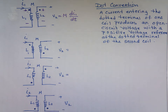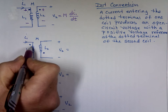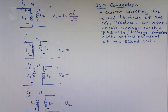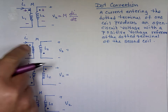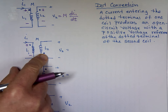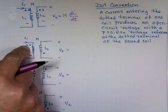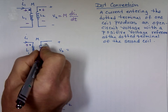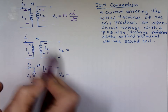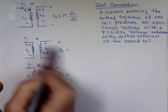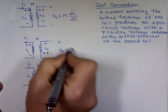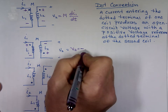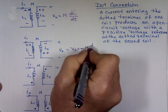Now let's look at the second example. The current enters the dot, so we mark this one plus to minus. That means the dot on the second coil matches — since the dot here is plus, that dot is plus, meaning this end is minus. Notice V2 is labeled in the opposite direction, so V2 is negative: V2 equals negative M di1/dt.